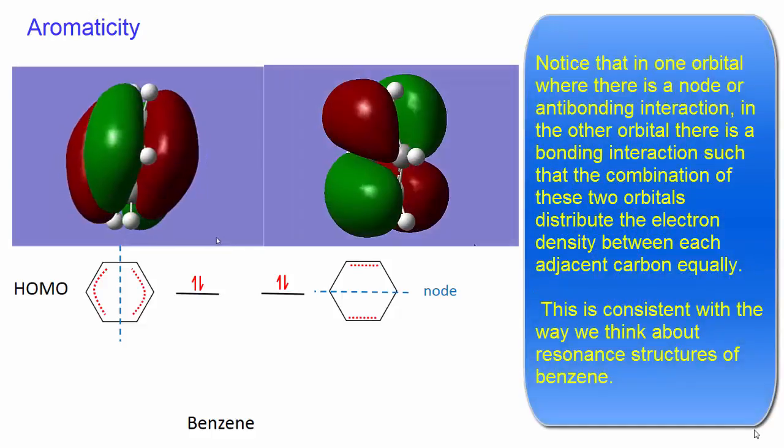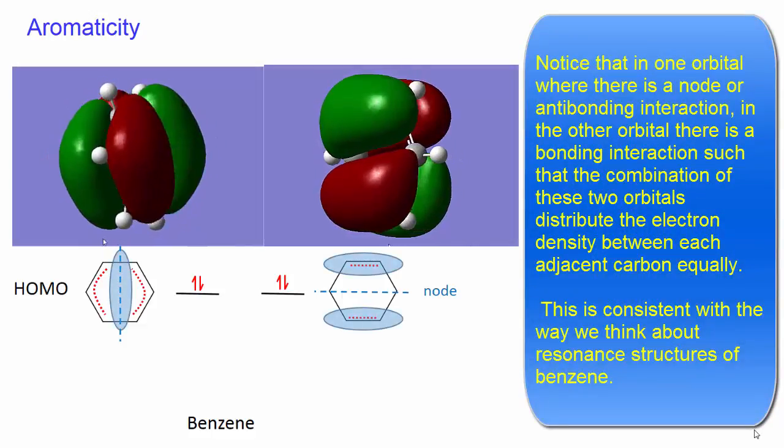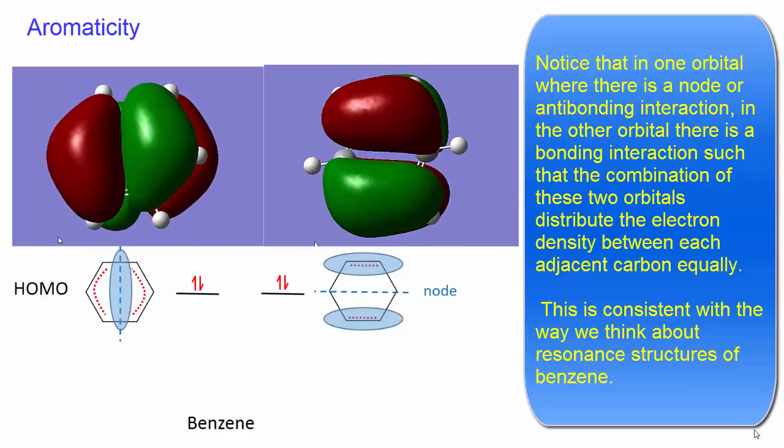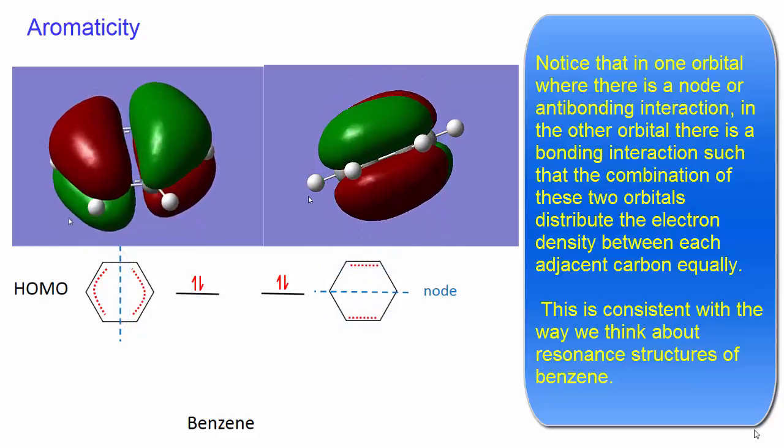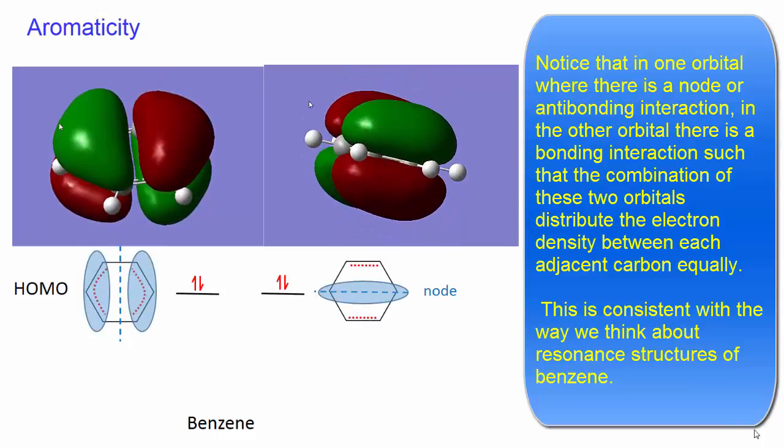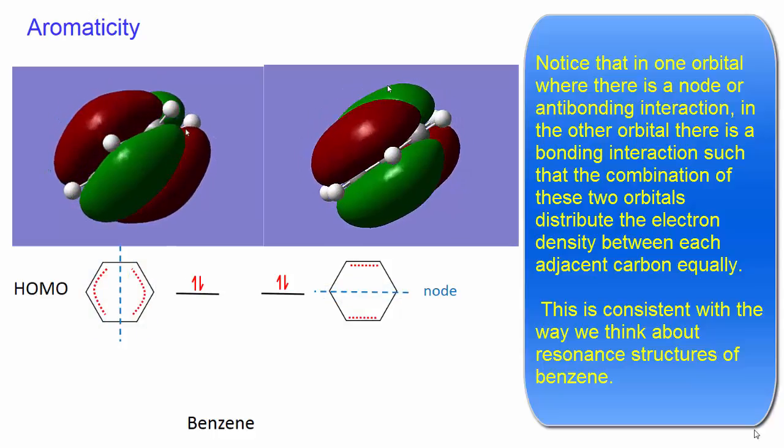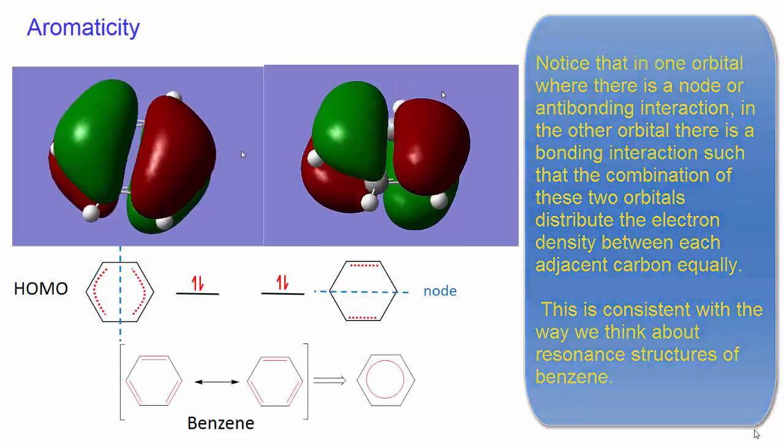Notice that in one orbital where there is a node or an antibonding interaction, in the other orbital there is a bonding interaction, such that the combination of these two orbitals distribute the electron density between each adjacent carbon equally. This is consistent with the way we think about resonance structures of benzene.